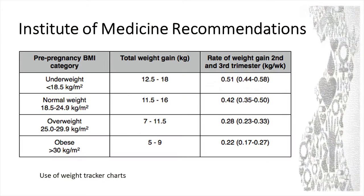The recommended gain in pregnancy is very dependent on your pre-pregnancy BMI. If you're underweight, they're keen for you to gain anywhere between about 12 and 18 kilos, working out at about 0.5 kilos a week in the second and third trimester — there shouldn't be a gain in the first trimester. Normal weight: anywhere between 11 to 16 kilos, just under a kilo per week. But once you start becoming overweight and obese, it's a far lesser gain for the whole pregnancy and for the weekly second and third trimester gain.